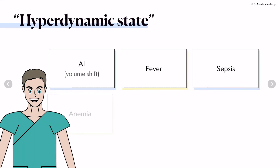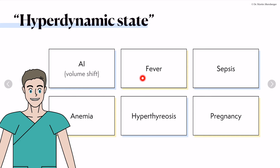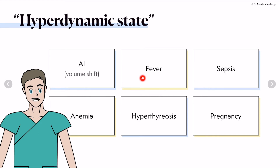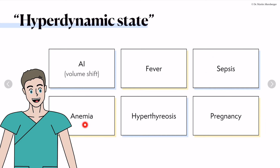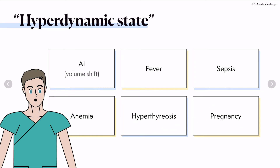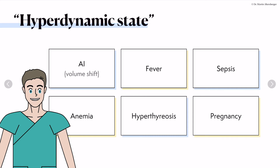We talked about the hyperdynamic state. What is a hyperdynamic state? If you have a relevant aortic regurgitation, there is a volume shift — flow through the valve plus backflow — which leads to a hyperdynamic state because of volume overload. Fever, sepsis, anemia, hyperthyroidism, and pregnancy can all lead to a hyperdynamic state. Before you evaluate aortic valve stenosis, there should not be a hyperdynamic state, as it could lead to overestimation of the gradients and severity of the aortic valve.